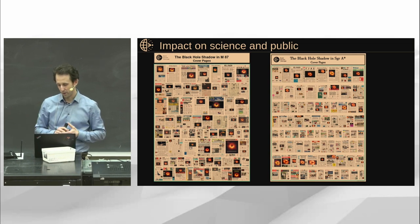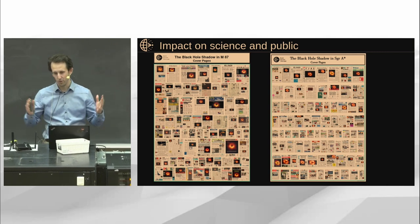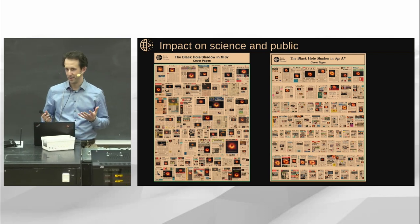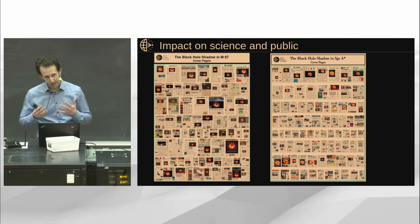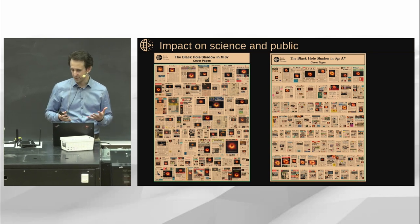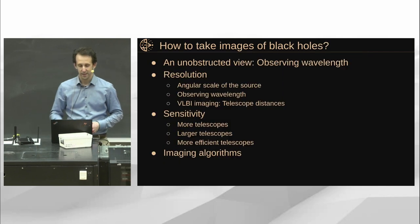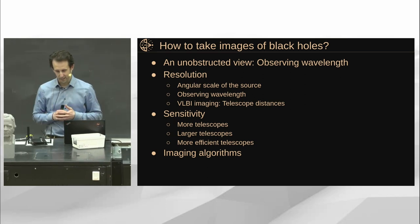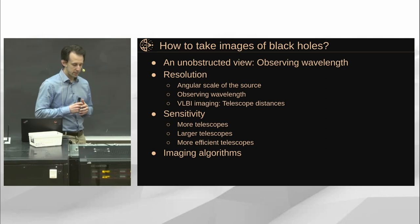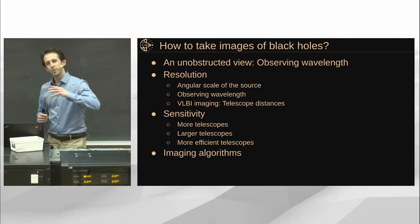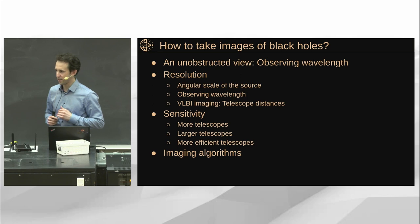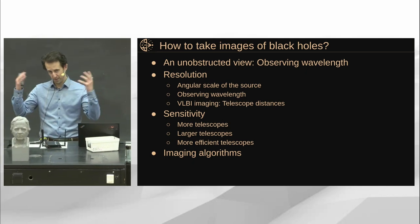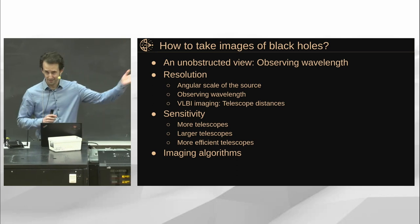So how do you take an image of a black hole? First of all — a point that often gets overlooked — you want an unobstructed view to the source. For the black holes we're looking at, that is one of the major things that makes this very difficult. The highest resolution we normally get in optics is in high-energy X-rays and gamma rays, but this is not where we have a clear view all the way to the black hole. We need an electromagnetic wavelength that allows photons to travel from near the black hole horizon all the way to our telescope.